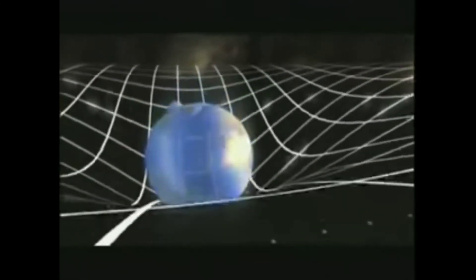Like the surface of a trampoline, this unified fabric is warped and stretched by heavy objects like planets and stars. And it's this warping, or curving, of space-time that creates what we feel as gravity.